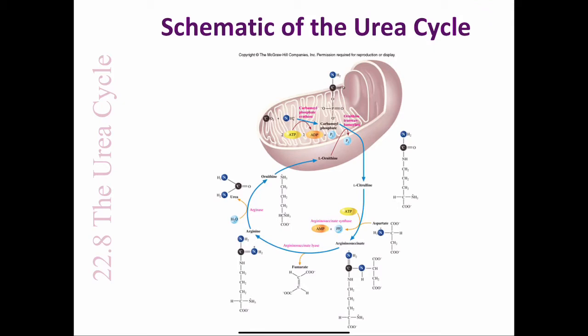Ornithine is an amino acid that is not one of the common 20 amino acids. The urea cycle involves several unusual amino acids that are not found in polypeptides. The five reactions of the urea cycle are shown in these figures, and details of the reactions are summarized as follows.